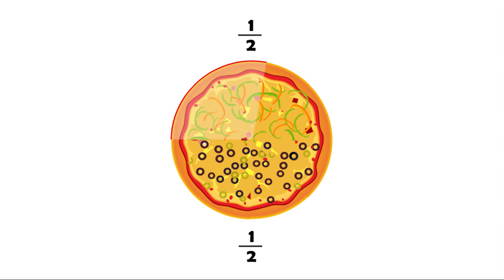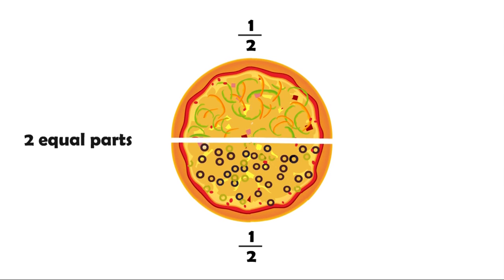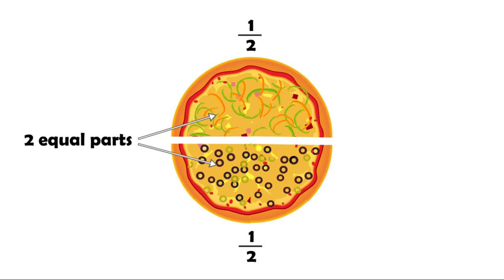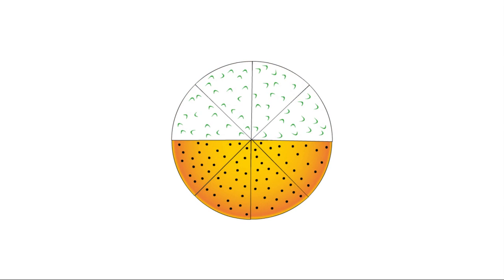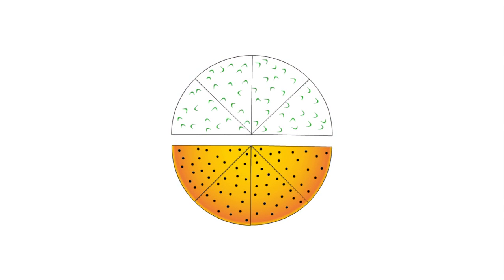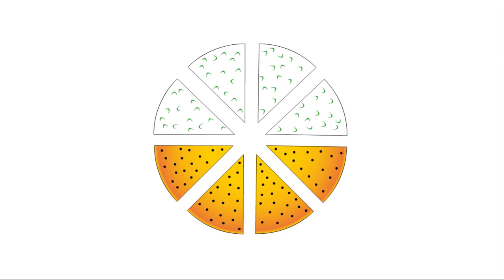As you can see, the whole pizza is divided into two equal parts. Notice also that the pizza is cut into eight slices. So in total, we have eight pieces and each piece is represented by the fraction one-eighth.